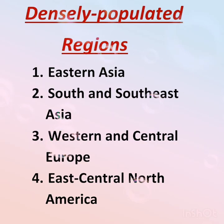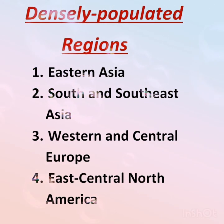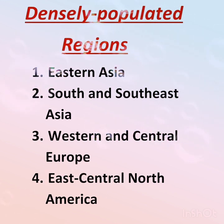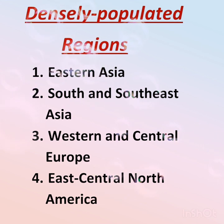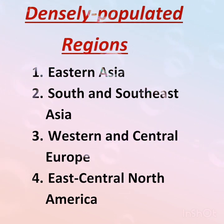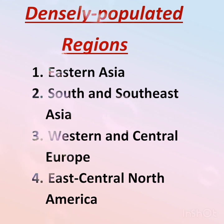Densely populated regions include countries that are developed agriculturally and industrially. Presently, four major regions in the world have been identified as densely populated. These include Eastern Asia, South and Southeast Asia, Western and Central Europe, and East-Central North America.